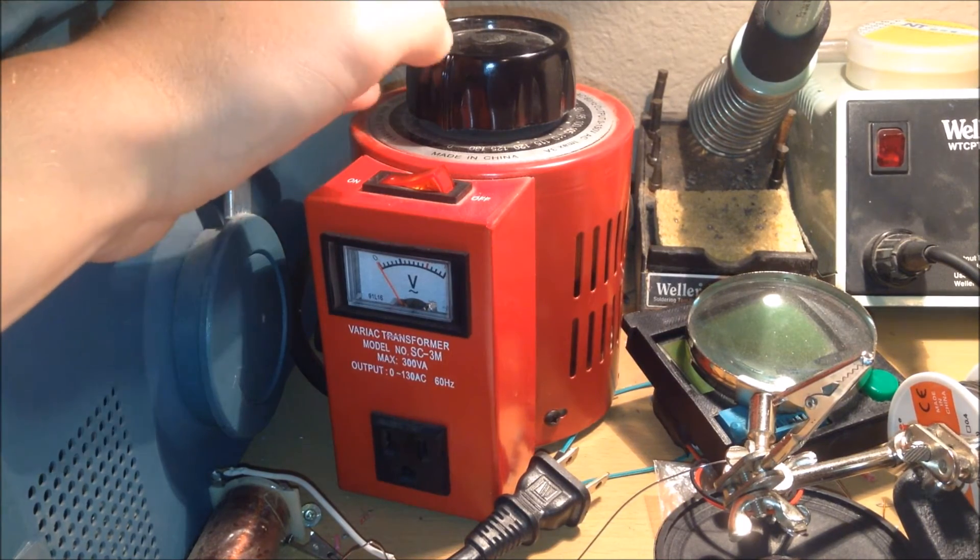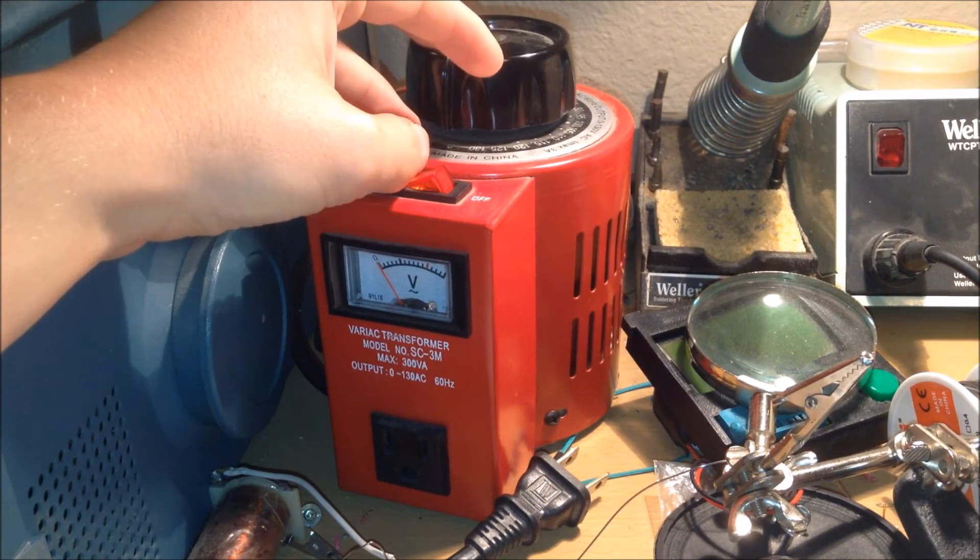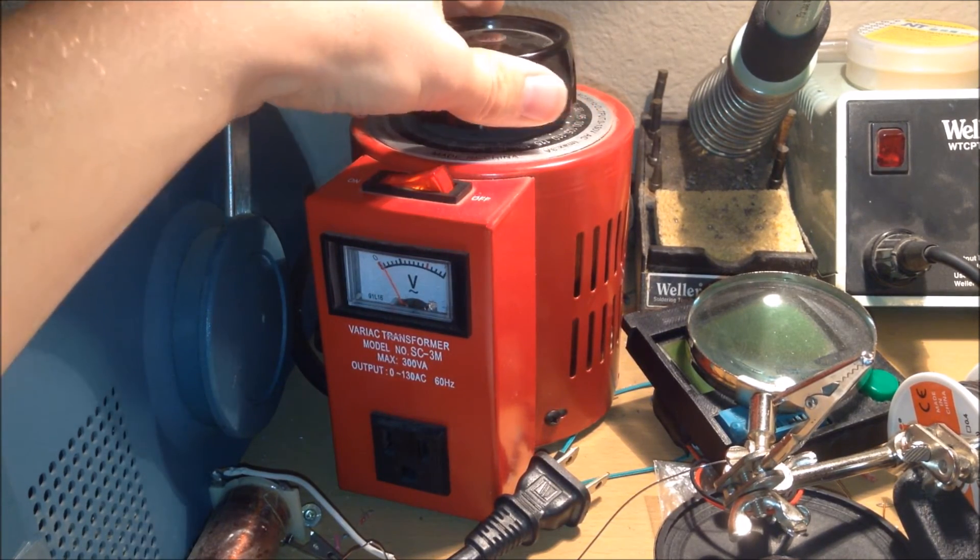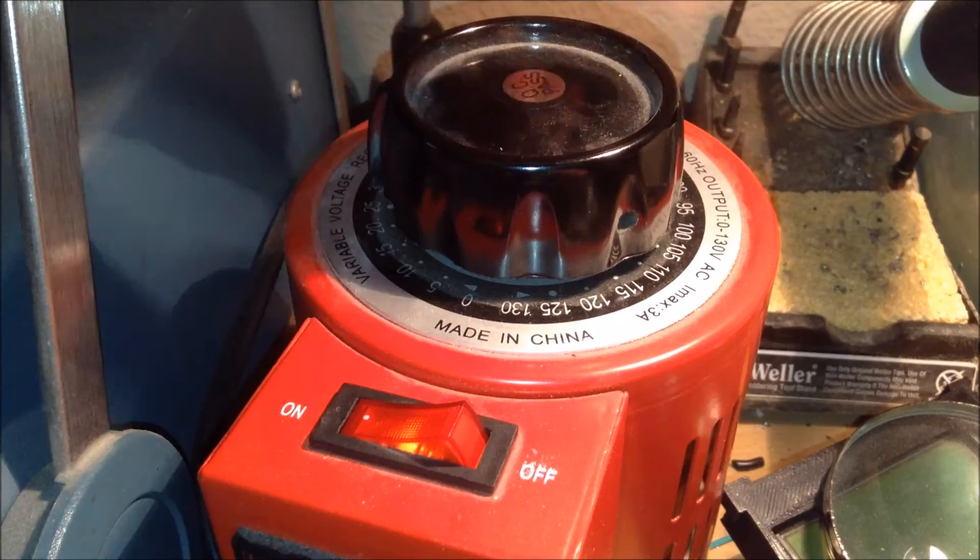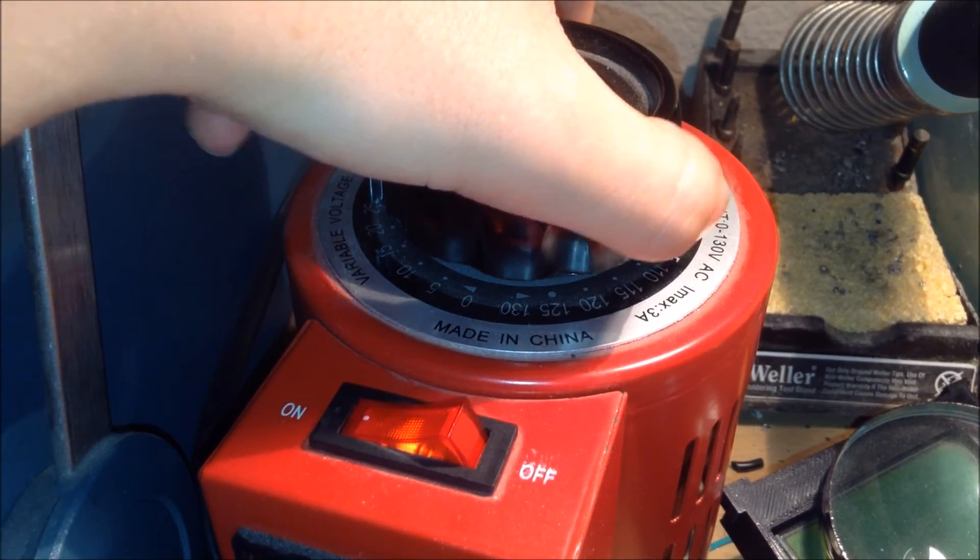And so what happens is it's the exact same principle as my autotransformer diagram that I drew, except that you can rotate where the tap is on the wire by rotating this knob. So by changing this knob to different numbers, I'm changing the tap that it's on.